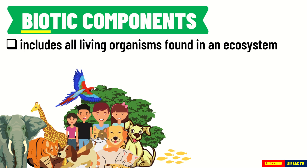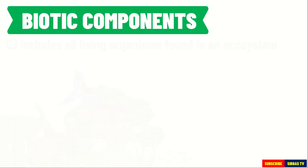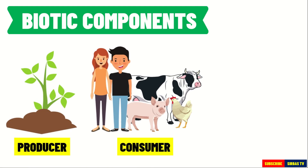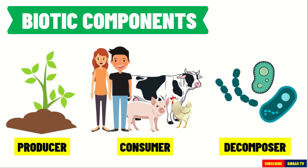Biotic components of an ecosystem include all living organisms found in an ecosystem. Biotic components include producers or plants, consumers such as animals, and decomposers such as bacteria. We are going to discuss in detail the role of producers, consumers, and decomposers in our next video.